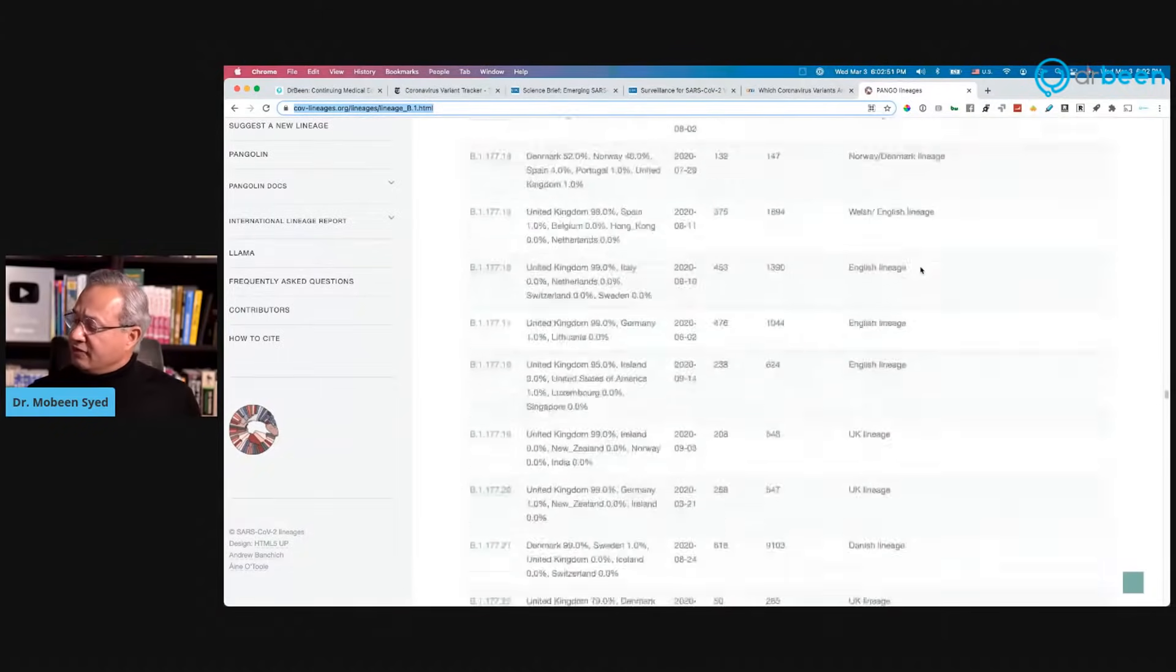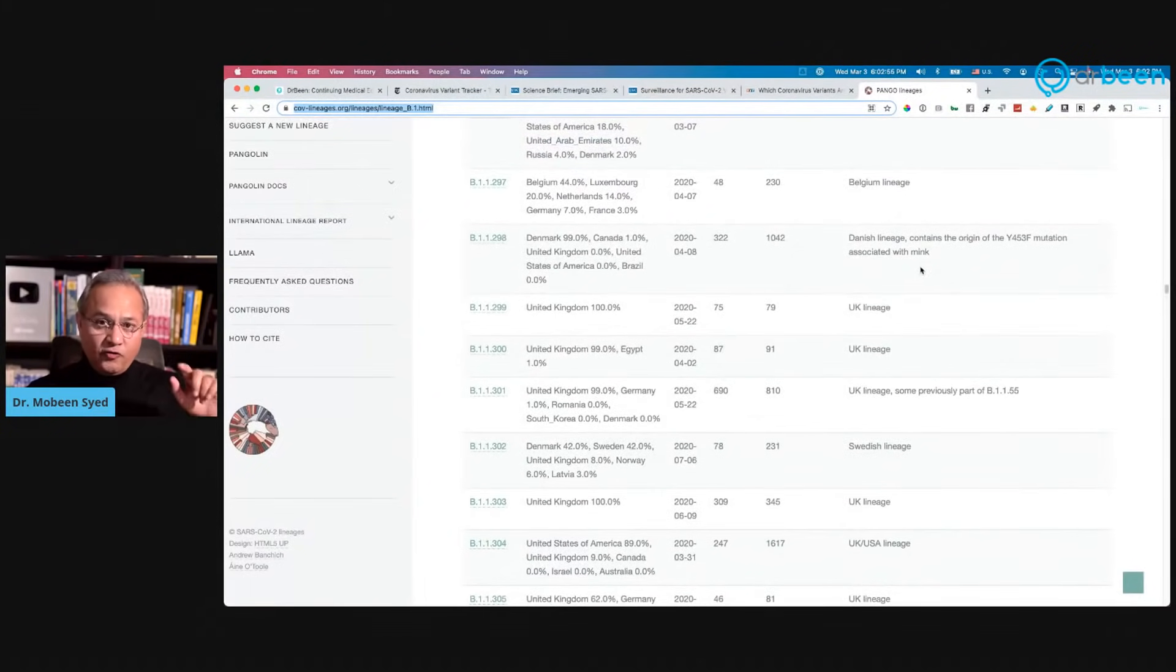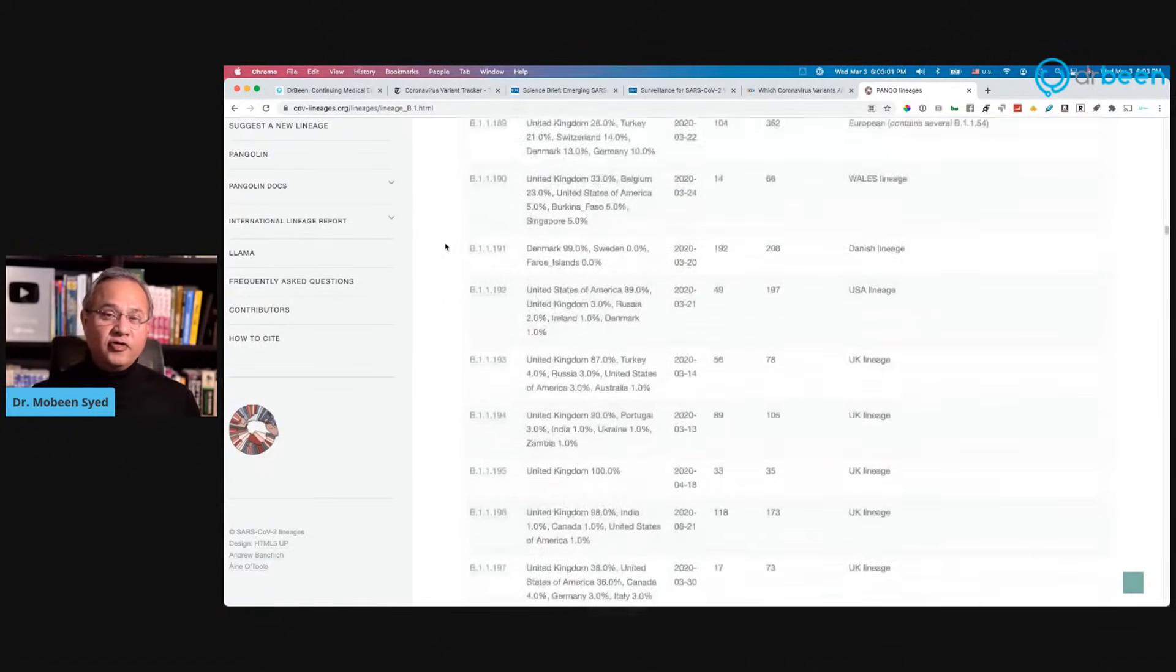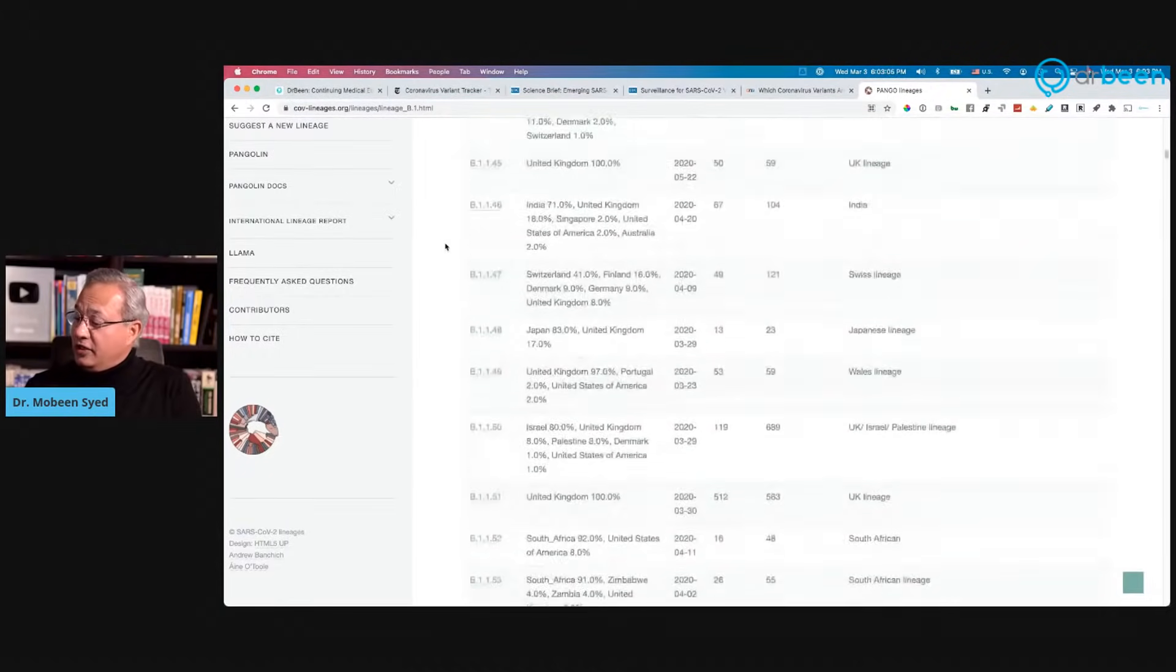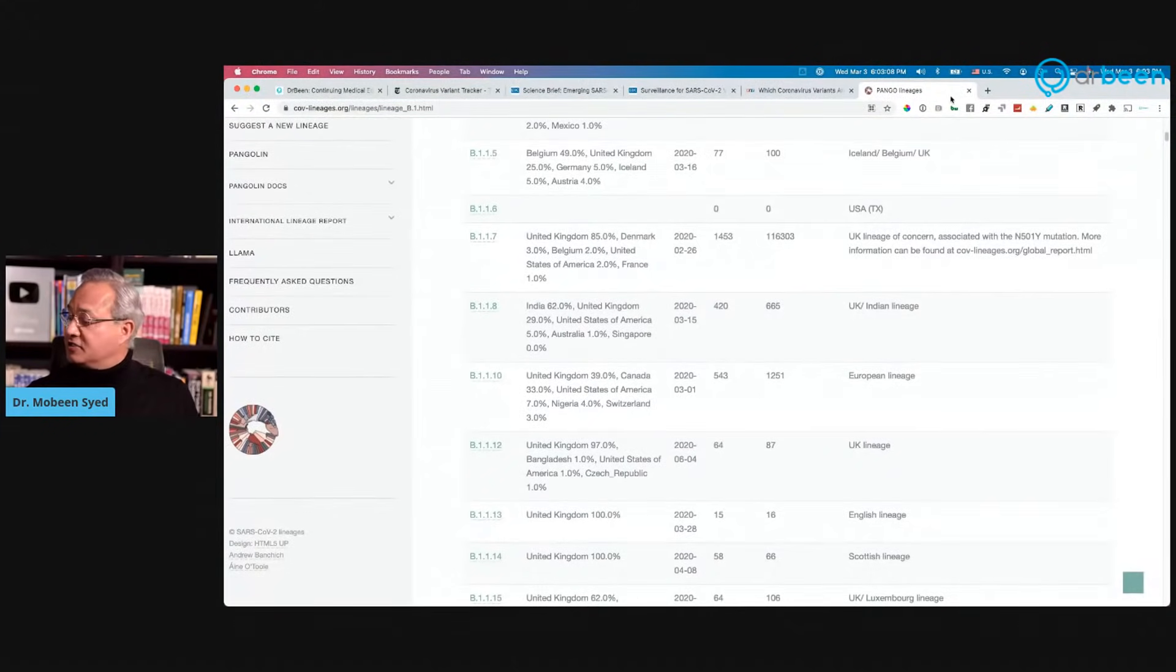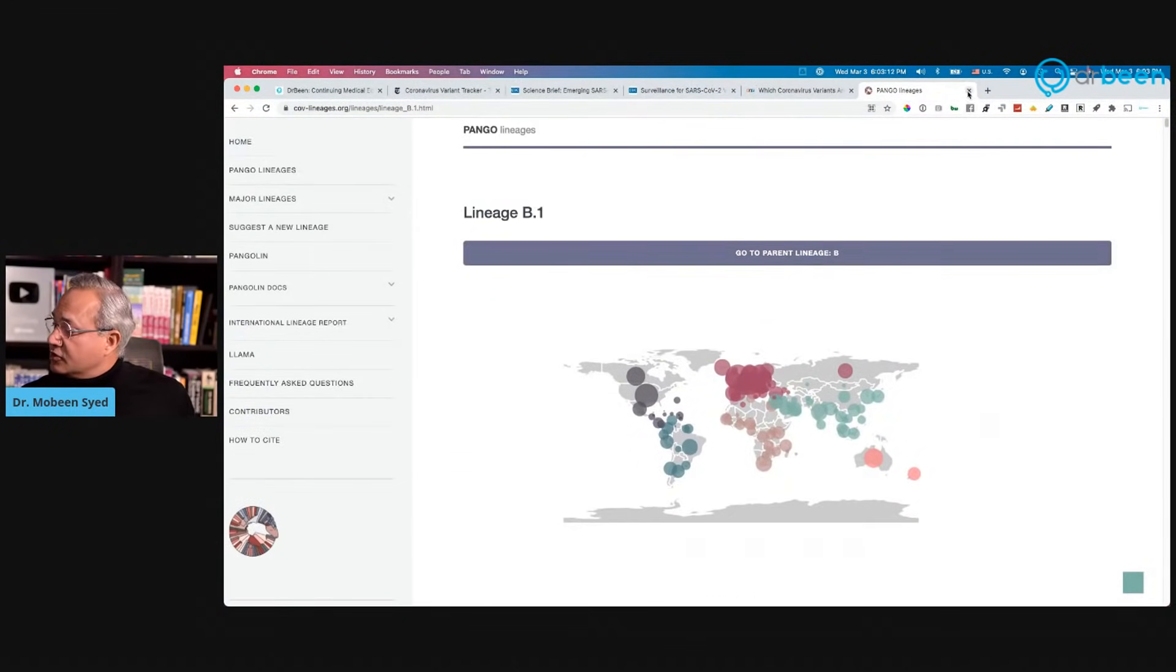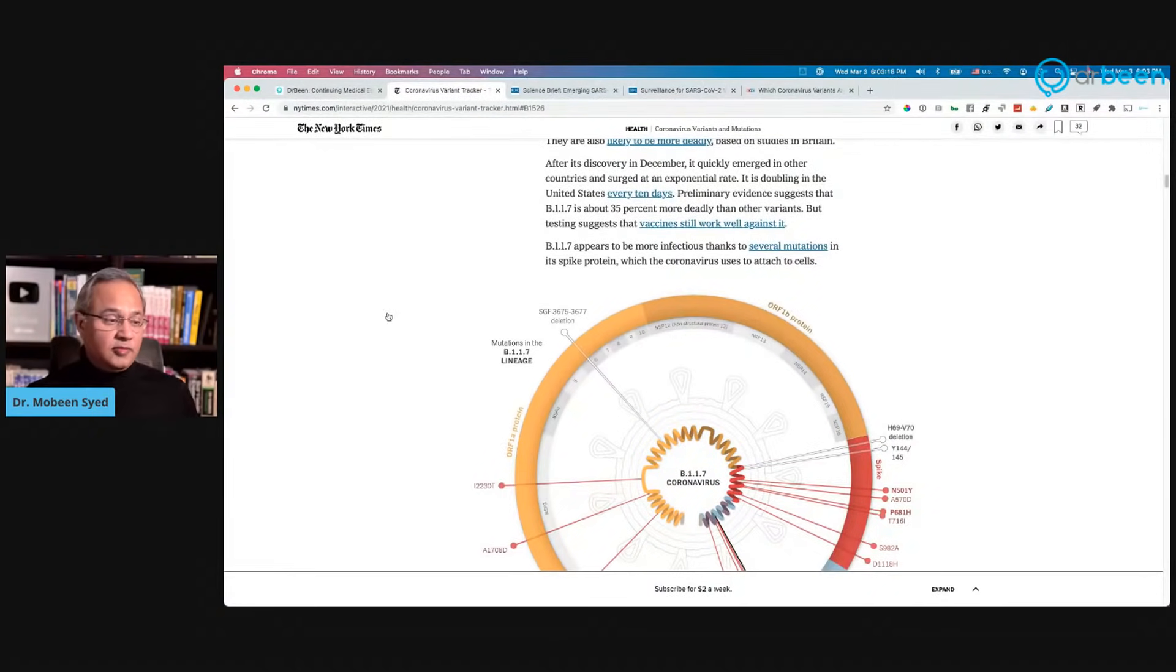This is also a very decent site, lineage cov-lineages.org, and they are keeping track of various variants. You can see this whole list is variants, and these are just some of them. I'm going to turn this one off as well because this also is going to take processing, and now we would use this one in my illustrations.